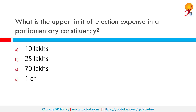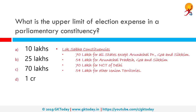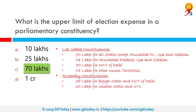What is the upper limit of election expenses in a parliamentary constituency? As per current norms, the maximum limit of election expenses per candidate is: for Lok Sabha, ₹70 lakh for all states except Arunachal Pradesh, Goa and Sikkim; ₹54 lakh for Arunachal Pradesh, Goa and Sikkim; ₹70 lakh for Delhi; and ₹54 lakh for other union territories. The correct answer is ₹70 lakh. For assembly constituencies it is ₹28 lakh for bigger states and ₹20 lakh for smaller states and union territories.